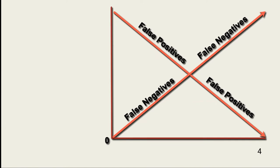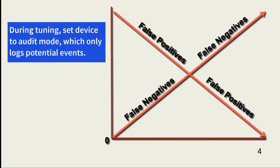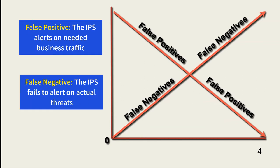One of the challenges associated with implementing IDS/IPS is dealing with false positives. When a detection device is first implemented, it will inevitably begin reporting on or blocking actual business traffic. This is why tuning is needed. When first implementing a detection device, it is configured in audit mode. This means that it will log all potential attacks, but it will not block or alert on them. The security team then works over time to configure the device to ignore normal business traffic. Tuning can take weeks to complete, depending on the amount of traffic the device is intended to monitor.